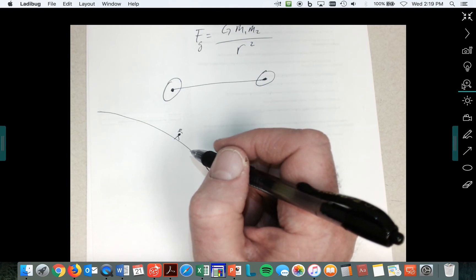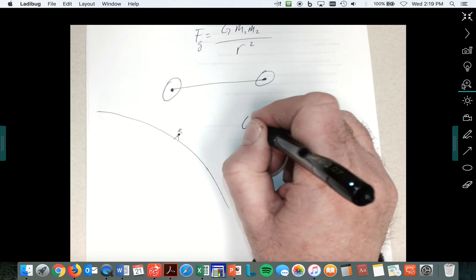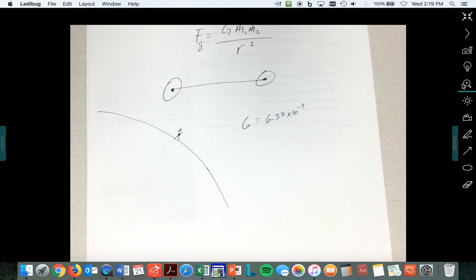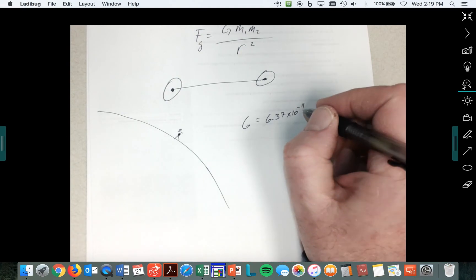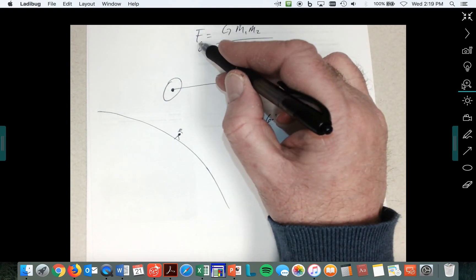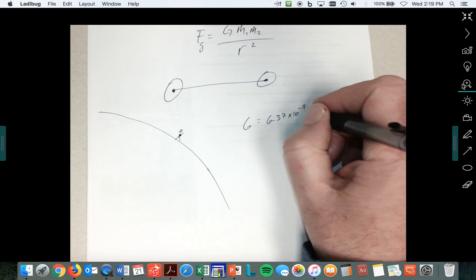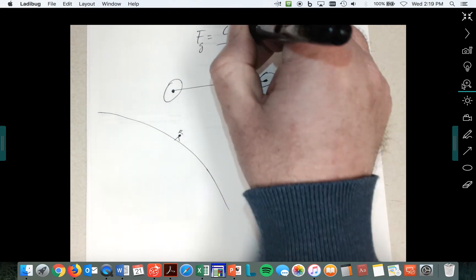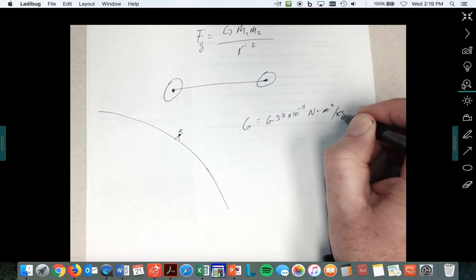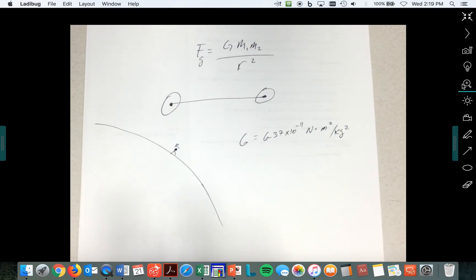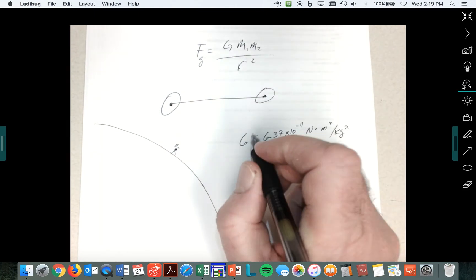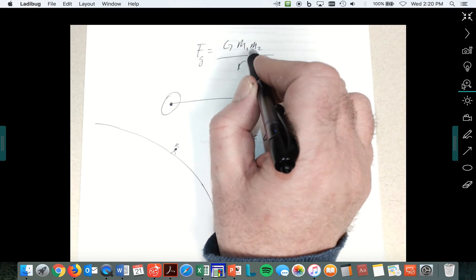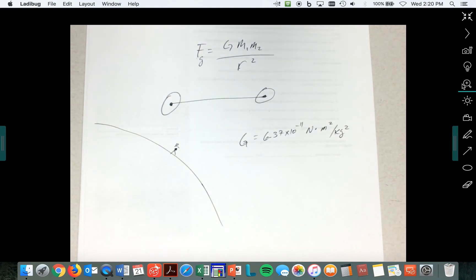When we know these things, we know that G is equal to 6.37 times 10 to the negative 11. That's the hardest part to remember. Now look, it's got to come out to be a force. It's got to come out to be a Newton. So it's Newtons. What's in the denominator? Meter squared per kilogram squared. That's the way you can figure out what certain constants are. As you look at, well, what do they get? Well, we got to get a force here.